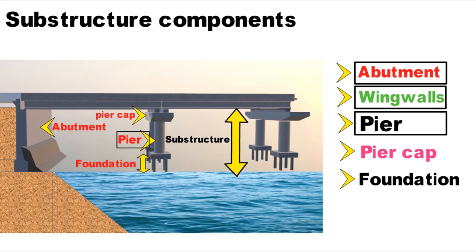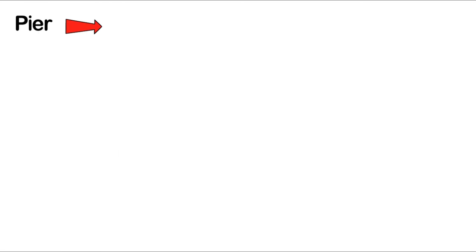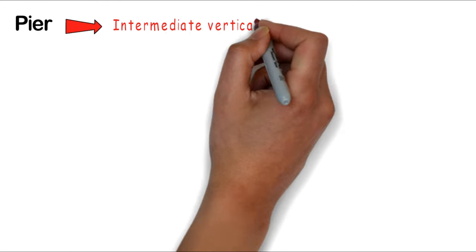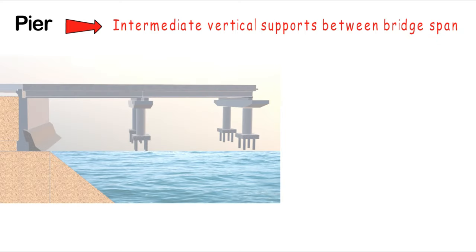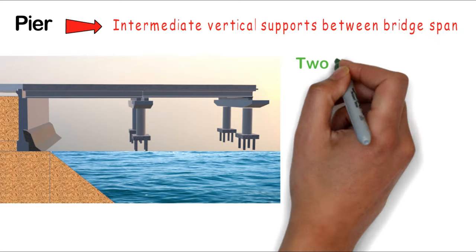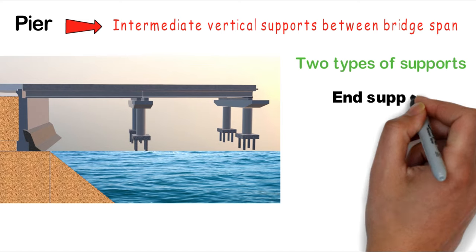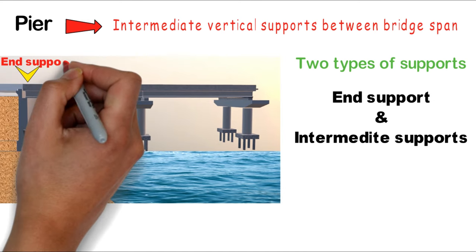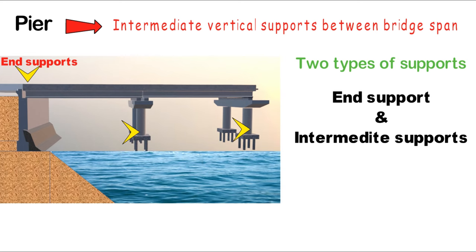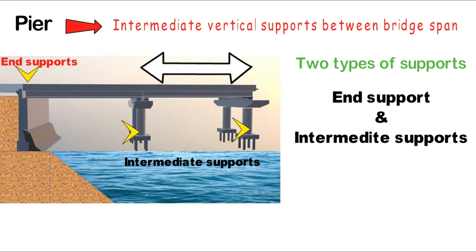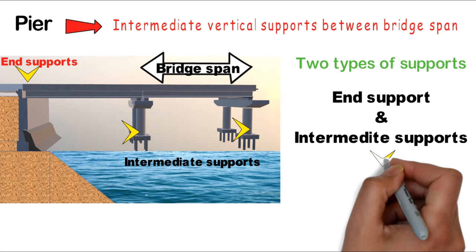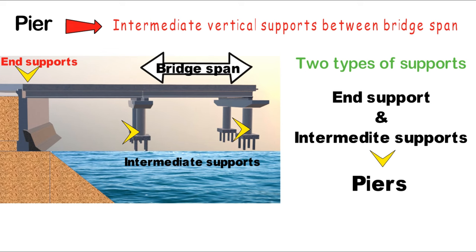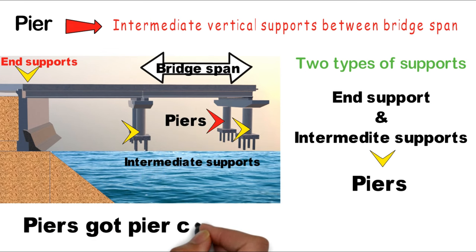Next is the pier. A pier is an intermediate vertical support between bridge spans. The end support is called the abutment and the intermediate supports are called piers. Two types of supports exist: end support and intermediate support — that is the key difference.